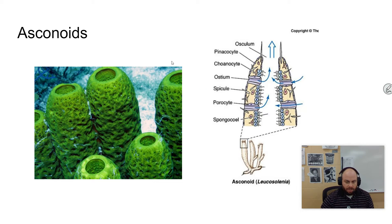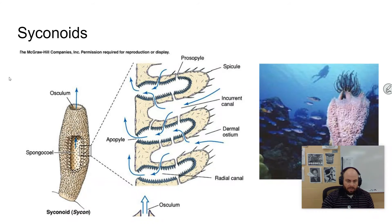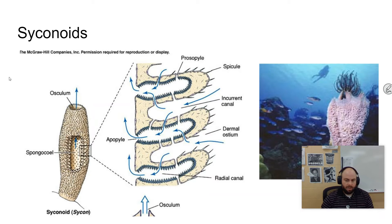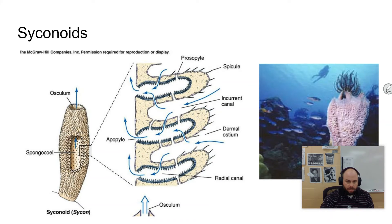The asconid has less surface area for feeding, so these sponges are typically long tube-shaped sponges. The next type is the syconid. Syconids are usually larger than asconids because they have increased their surface area to volume ratio, allowing them to be bigger. The body wall is thicker and more complex. You still have an osculum, but much more surface area, collecting water through pores and sending it into the inner spongiocele.